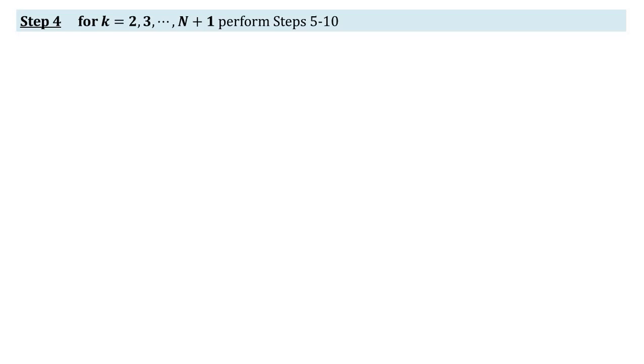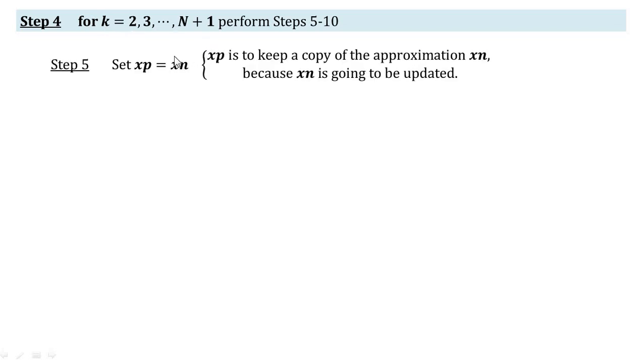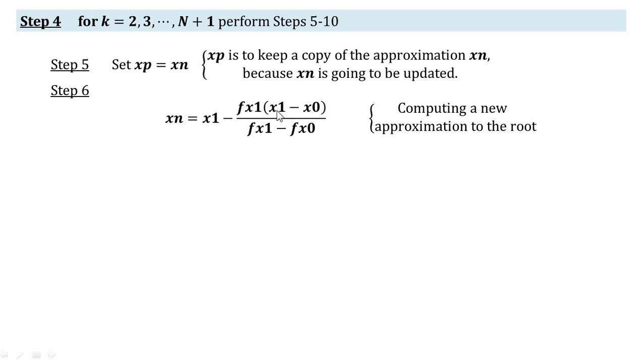The next is the major processing step, that is step 4, in which we will perform iterations of the method. We take a for loop in which the index variable k varies from 2 to N plus 1. In each iteration, first of all we will copy xn value into xp. xp is to keep a copy of the approximation xn, and xn is going to be updated using x0, x1 and f(x0), f(x1) in this formula. We will get the latest approximation to the root, evaluate the function f on xn and we call it f(xn). Next we compute the error between these two latest roots as